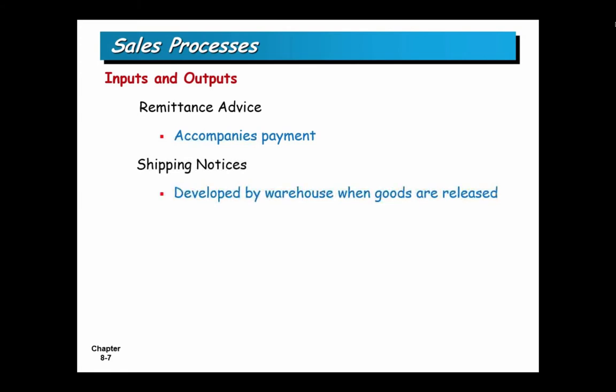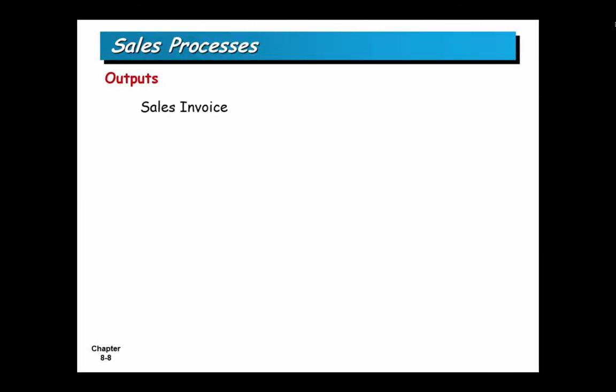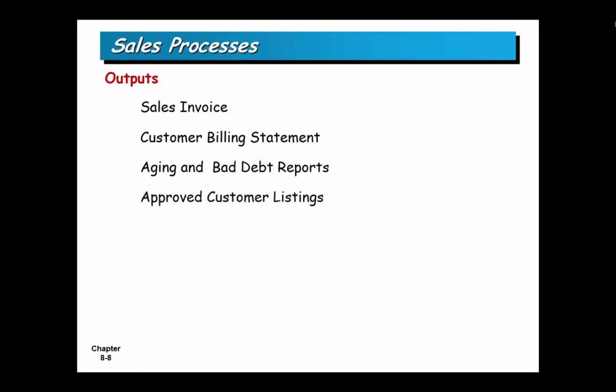Shipping notices tell the customer when items have been shipped. Outputs include your invoice — sent to your customer to get paid in a business-to-business context — and the billing statement, which is a listing of all invoices. There are bad debt reports, an aging report showing which customers owe money and for how long. Aged receivables become bad debt when you have very low expectation of receipt. You might also have a list of approved customers and an analysis of all your sales to understand what products work.